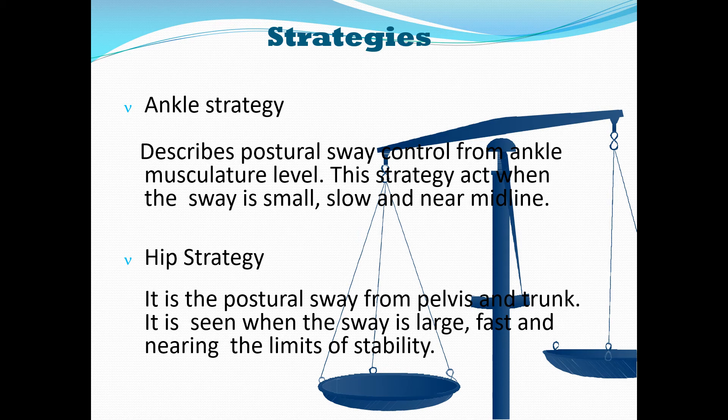Second is the hip strategy — postural sway from the pelvis and trunk. It is seen when the sway is larger, fast, and nearing the limits of stability. Using the same example, if you push your friend with more force, the center of gravity from the upper body moves towards the boundaries of the base of support. At that time, the hip muscles try to compensate. So small and slow force activates the ankle strategy, while larger and fast force brings the hip strategy into play.